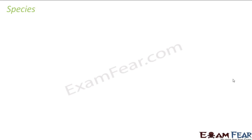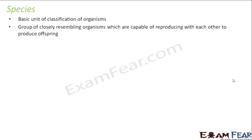So let us see what species are. They are the basic unit of classification of organisms. These are a group of closely resembling organisms which are capable of reproducing with each other to produce offspring. An important point to note here is 'closely resembling organisms' — that means there will be a lot of similarities between organisms belonging to the same species.